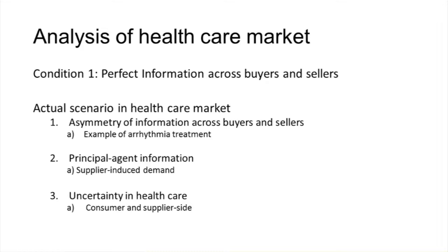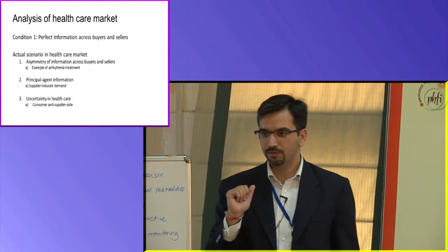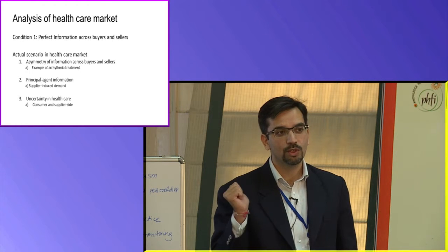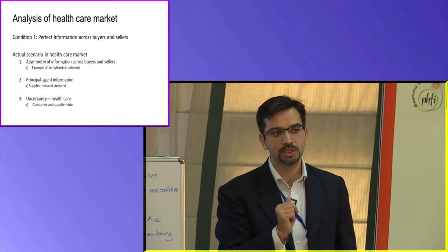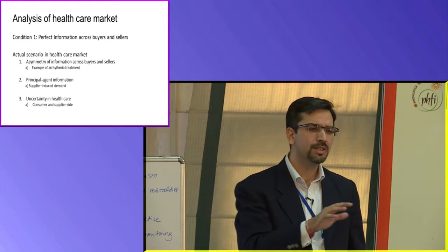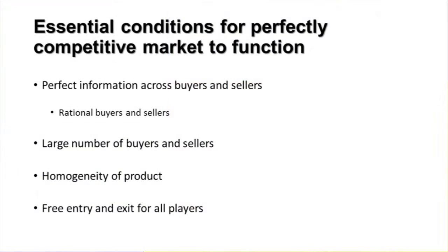The extent of information asymmetry is too huge in the healthcare sector, and this leads to what is called the principal-agent relationship — you as the consumer or principal invest all your faith and confidence in the doctor to take a decision on your behalf. Now the doctor is making a decision on your behalf. Believe me, if such a patient comes, there will be a hundred reasons for the doctor to convince the patient, and the patient has no choice. This also comes as a violation of the third condition — homogeneity.